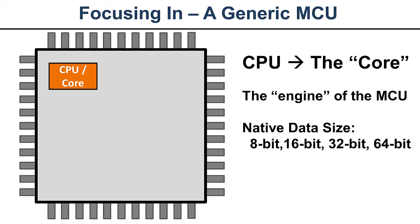We often select a microcontroller based upon the CPU and the core. One of the parameters we look at is the native data size — that means how big of a binary number, in bits, that processor can compute at one time. Can it add 32-bit numbers? 16-bit? 8-bit? 64-bit? What's its register size? Often the native data size is the register size, but not always. It reflects what its native data type is and what's the biggest number it can process at any one time.